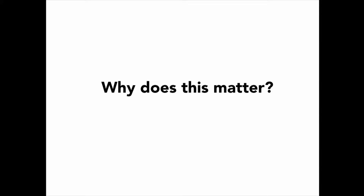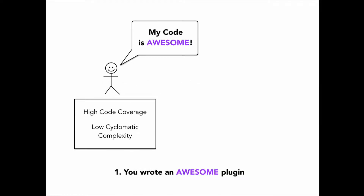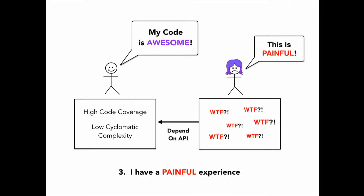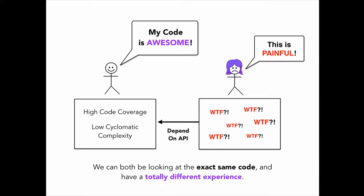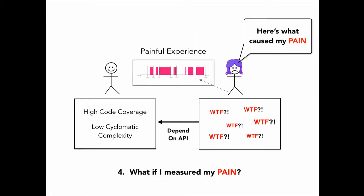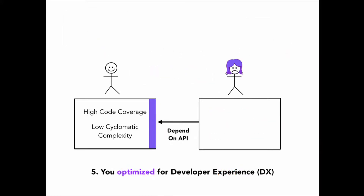Why does this matter? Imagine you wrote this awesome plugin and it's got high code coverage, low cyclomatic complexity, all those good things. And then I try to use your awesome plugin, but I don't have such an awesome experience. Usability problems kind of roll downhill and we can both be looking at the exact same code and have a totally different experience. But what if I measured my pain and then gave you that experience as feedback? Then you saw that and said, OK, I can fix that, and then you optimize the developer experience.